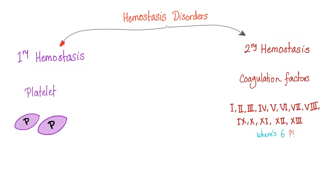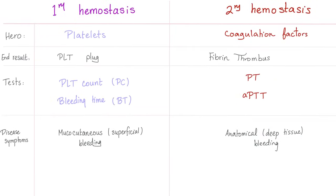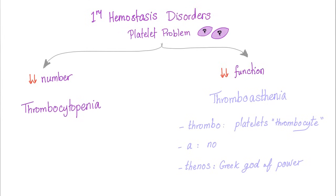Hemostasis disorders are either problems with primary hemostasis or secondary hemostasis. Primary hemostasis involves platelets, and the end result is the platelet plug. Secondary hemostasis involves coagulation factors, with the end result being fibrin and thrombus. Tests for primary hemostasis include platelet count, bleeding time, and platelet aggregometry. Secondary hemostasis requires PT and PTT. Clinically, primary hemostasis defects cause mucocutaneous, superficial bleeding, while secondary hemostasis problems cause anatomical or deep tissue bleeding.